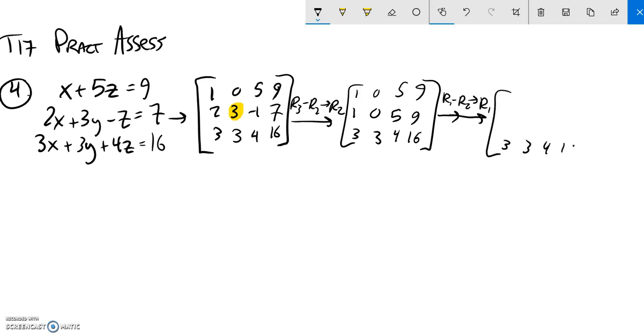3, 3, 4, 16. Row 1 is 2, it's going to stay as it is. 1 minus 1 is 0. 0 minus 0 is 0. 5 minus 5 is 0. 9 minus 9 is 0.